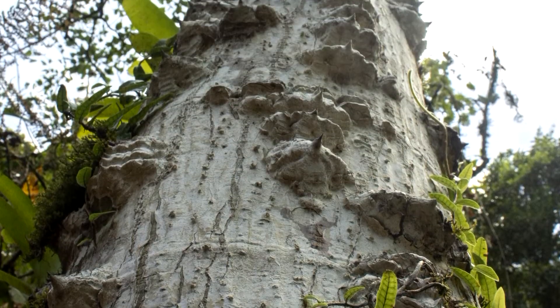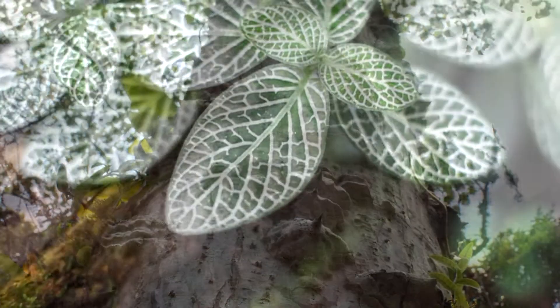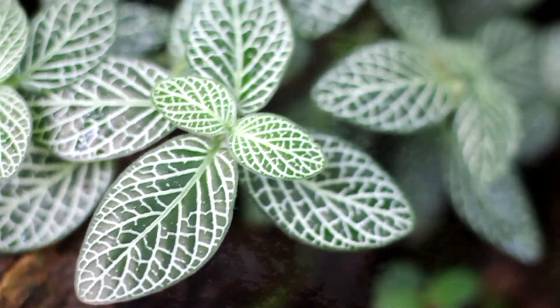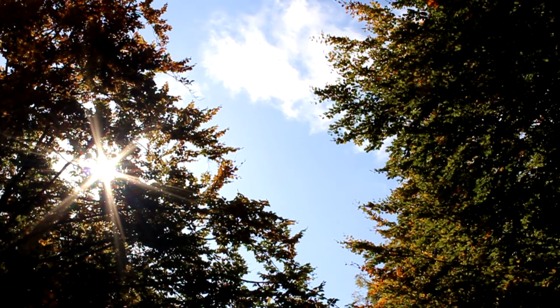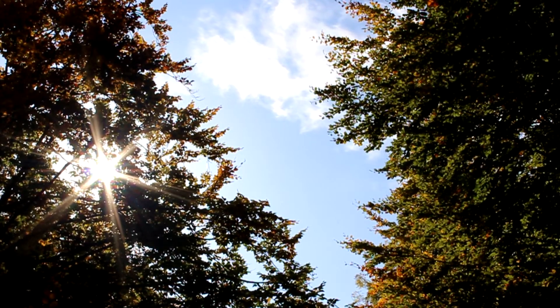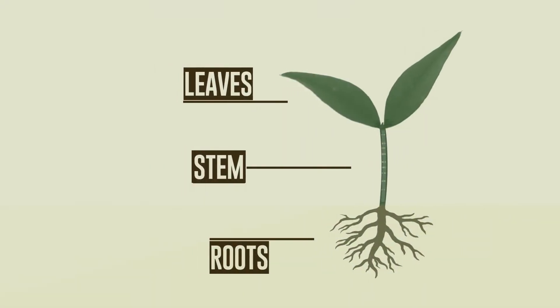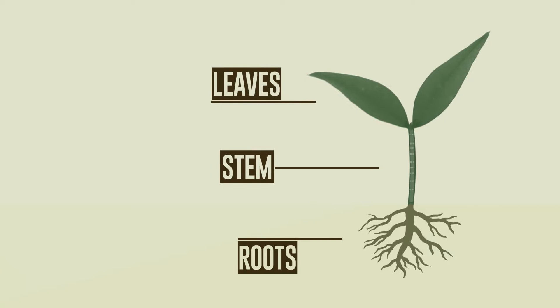Plants transport water over long distances, typically from the roots to the leaves, where water evaporates by solar energy. The transport process inside the plant mainly occurs in the so-called xylem tissue.